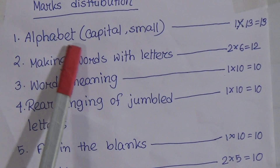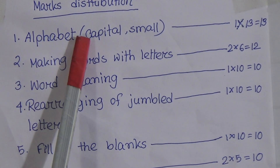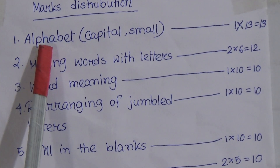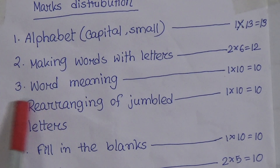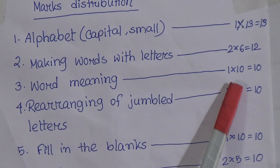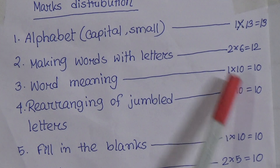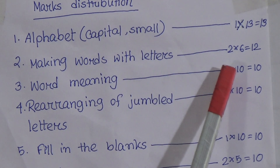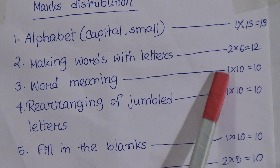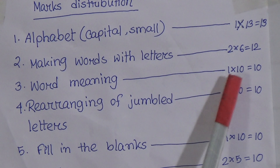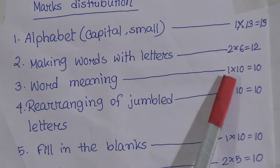For the alphabet section, you have to write 13 letters. Number two is word meaning — you will get ten word meanings, and each word meaning has one mark, so the total is 10 marks.